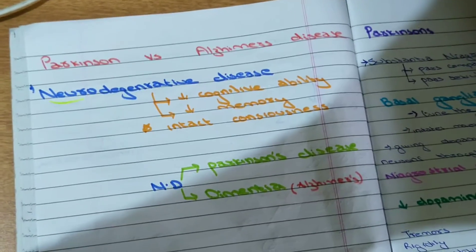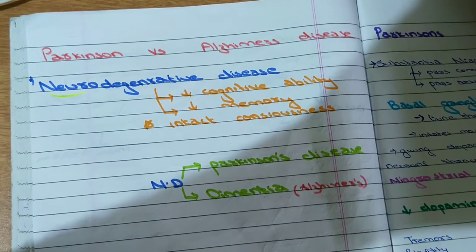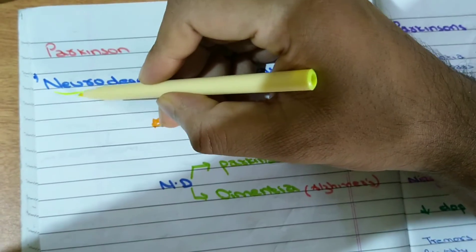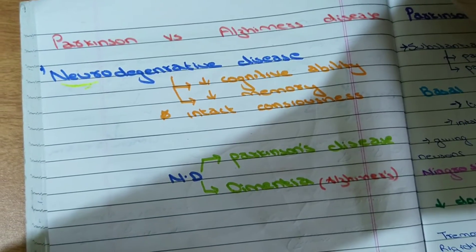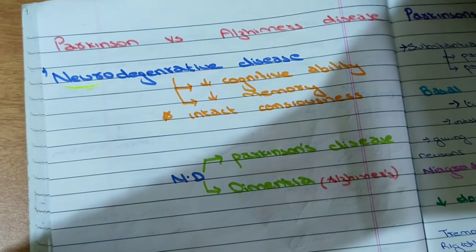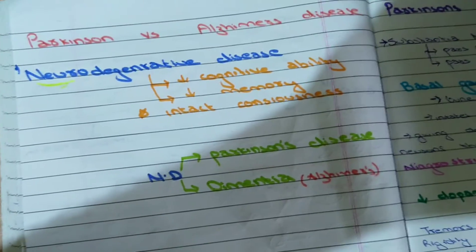Today we're going to talk about the difference between Parkinson's and Alzheimer's disease. Both are neurodegenerative diseases. Neuro means nervous system or brain, and degenerative means lacking or losing. So there will be a lacking or losing of a part of the brain in both Parkinson's and Alzheimer's disease.